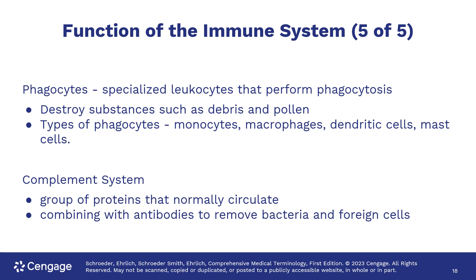Phagocytes, which are specialized white blood cells, are leukocytes that perform phagocytosis — they eat the foreign substances. There are several types, like macrophages, monocytes, and mast cells. The complement system is made up of a group of proteins that are circulating in the blood and combine with antibodies to remove bacteria and other foreign cells.